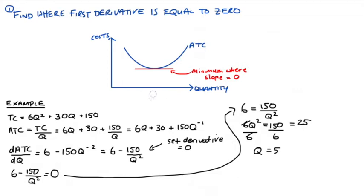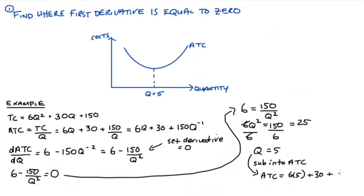Now if we drew it out it would look like this, and we can use the diagram above, that minimum point there is at q is equal to 5. In order to get the level of our average total cost, we can substitute in q is equal to 5 to our average total cost function. We're left with 6 times 5, plus 30, plus 150 over 5, and if you work that out that's all equal to 90. So that's our level and our quantity.